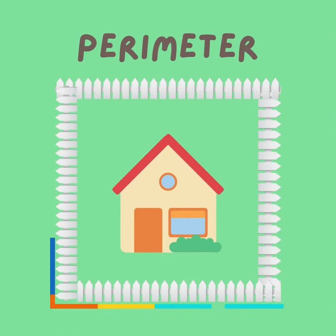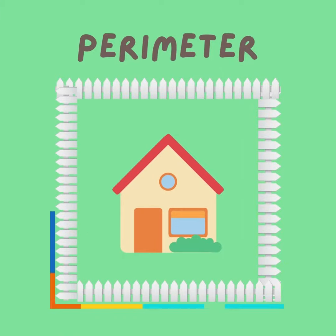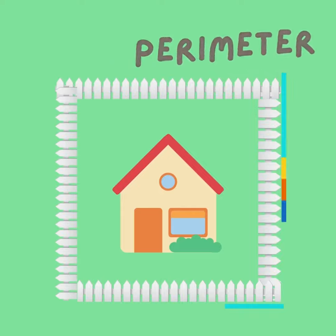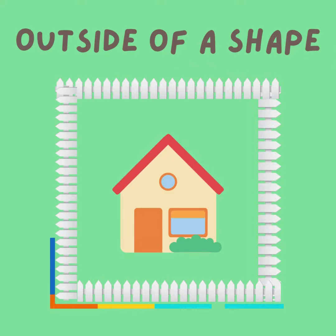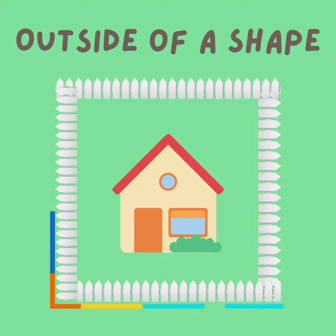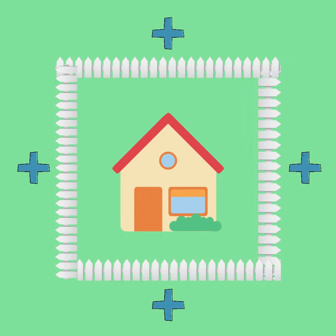You can think of the perimeter as the fence around your yard. It's the distance around the outside of a shape. Finding the perimeter is as easy as adding together the length of each side of a shape.